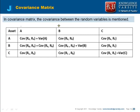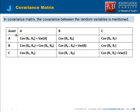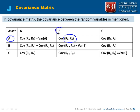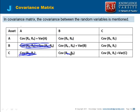Next we look at the covariance matrix. In a covariance matrix, we represent the covariance between the random variables. Unlike the correlation matrix, the diagonal elements are not 1. Instead, the diagonal element for A is the covariance of A with itself, which is the variance of A. So the diagonal contains the variance of A, variance of B, and variance of C. The off-diagonal elements are covariances, and covariance between B and A equals covariance between A and B, so those cells are redundant.